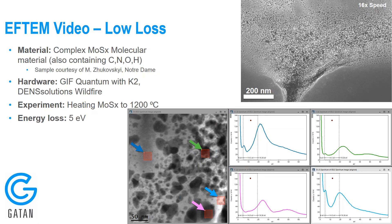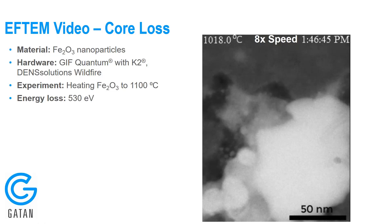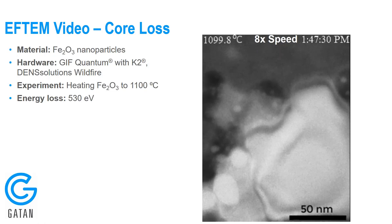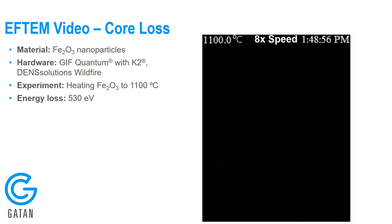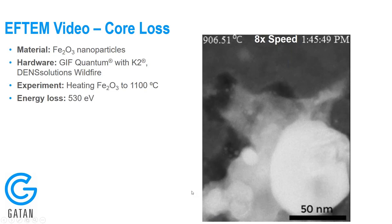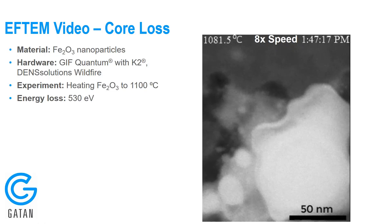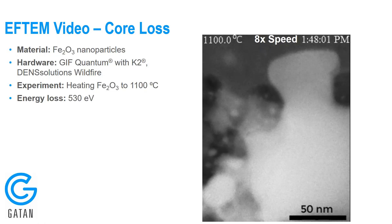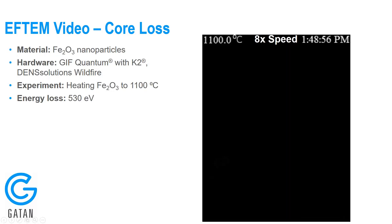My next example is another EFTEM video, this time in the core loss region of the spectrum. Here we're looking at an iron oxide particle, again heating up to a very high temperature — 1,100 degrees. We can see a clear morphology change. This type of video of the oxygen K-edge in EFTEM would be very difficult, if not impossible, to obtain without the counting and low-dose capabilities of the new K2 detector on the back of the GIF, because the signal is extremely low at such high energy loss in EFTEM.